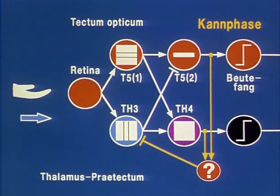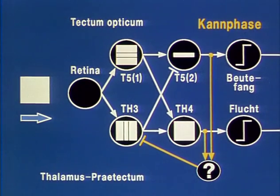That leads to a generalisation of the prey schema. The large moving square triggers the same processes as the hand.